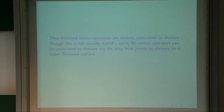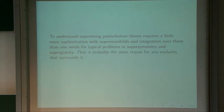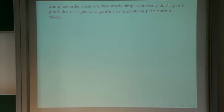Why was the theory in the 80s not more fully based on super-Riemann surfaces? Part of the answer is that it wasn't necessary, because in low orders you don't need that machinery. And part of the answer is that developing it that way requires a little more sophistication with supermanifolds and integration over them than one needs for typical problems in supersymmetry and supergravity. That's probably the main reason for any unclarity surrounding superstring perturbation theory — some low orders are deceptively simple and don't give a good idea of the general algorithm.